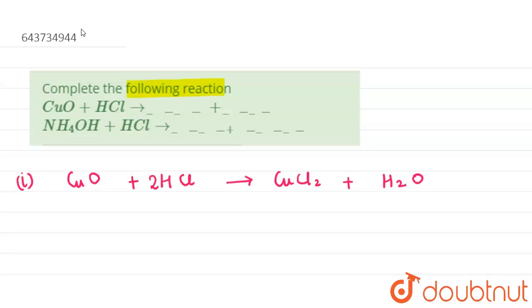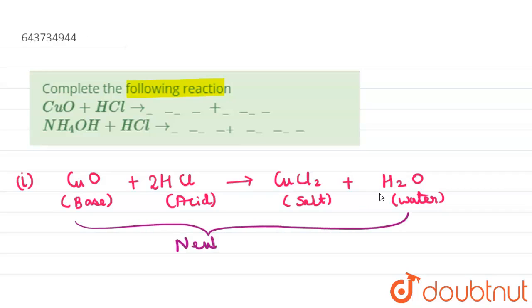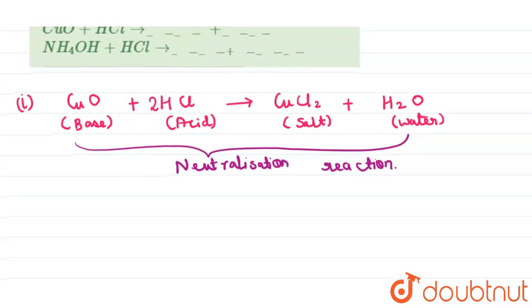So in this reaction, basically the base is cupric oxide and acid is hydrochloric acid. When these react, they form a salt - cupric chloride is a salt - and water. So the reaction will be categorized as neutralization reaction, because in neutralization reaction acid and base combine to form salt and water.